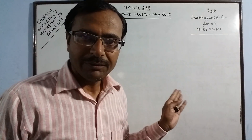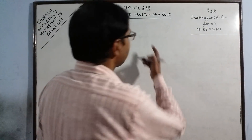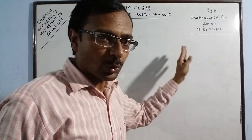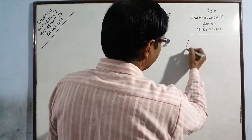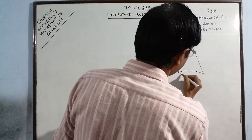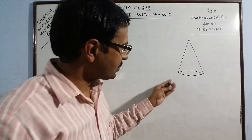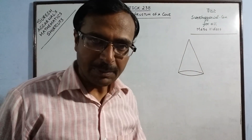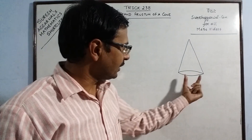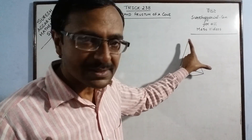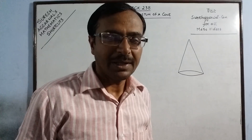To understand what frustum of a cone is, you need to look at this first. It involves the use of the word cone, so obviously it has something to do with a cone. A cone is the shape of a joker's cap or the shape of a soft ice cream. This shape has three dimensions: one is the radius of its base, one is the vertical height, and the other is the slant height.